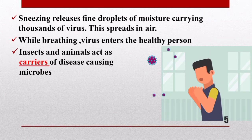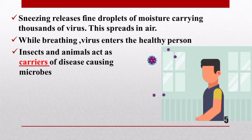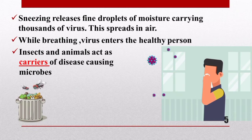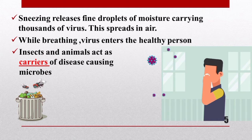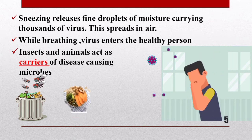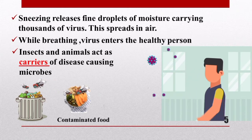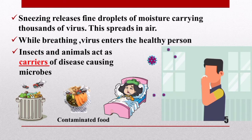There are some insects and animals which act as carriers of disease-causing microbes. The major carriers are houseflies and mosquitoes. Houseflies sit on garbage and animal excreta, and pathogens stick to their bodies. When these flies sit on uncovered food, they may transfer the pathogens and contaminate the food. Whoever consumes the contaminated food is likely to get sick, so always keep your food covered.